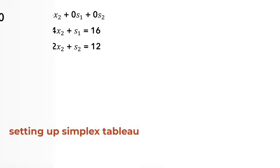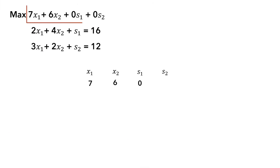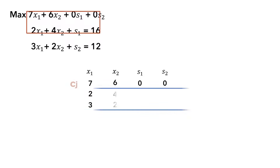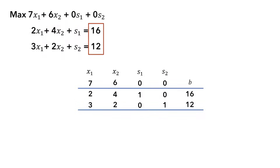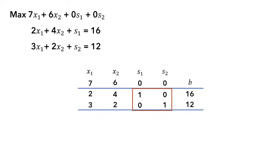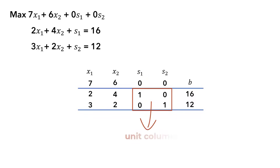To set this up in a simplex tableau, we can begin with the objective coefficient row, which we call the c row or the cj row, then the coefficients of the variables in the constraints, which we refer to as the A matrix, and their right sides, called the b column or quantity column. Since s1 and s2 have 1 in their columns with their other value being 0, they are called basic variables. These are also referred to as unit columns.